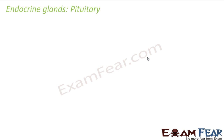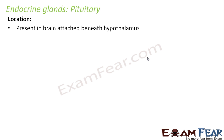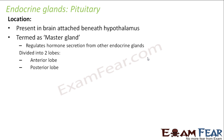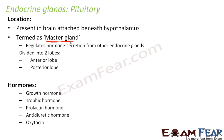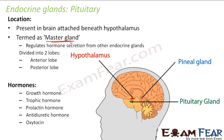Let us now talk about the pituitary gland. Its location is in the brain, attached beneath the hypothalamus. It is called the master gland because it secretes hormones that control many other endocrine glands in the body. The pituitary gland is divided into two lobes and is connected to the hypothalamus by a stalk-like structure.